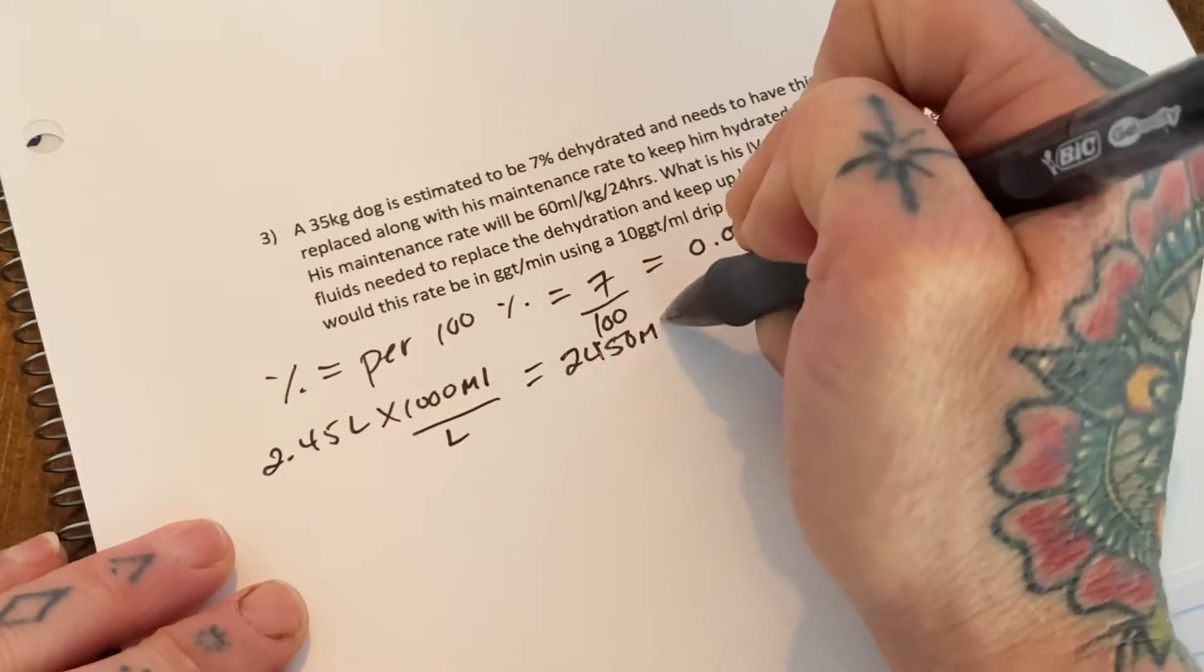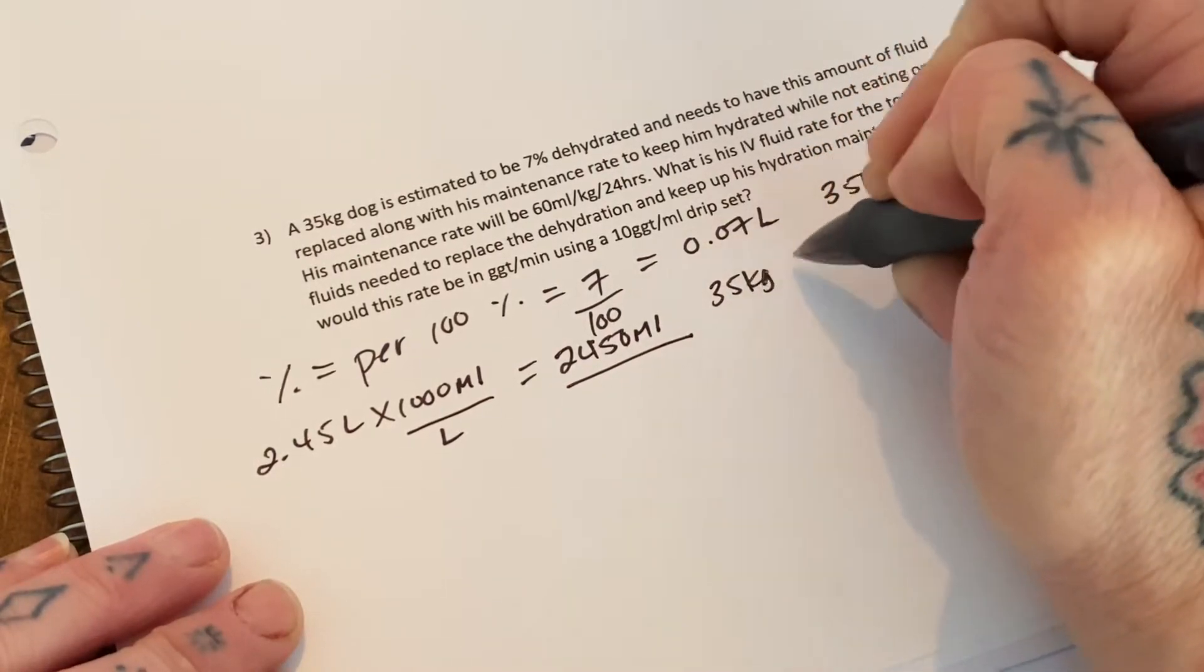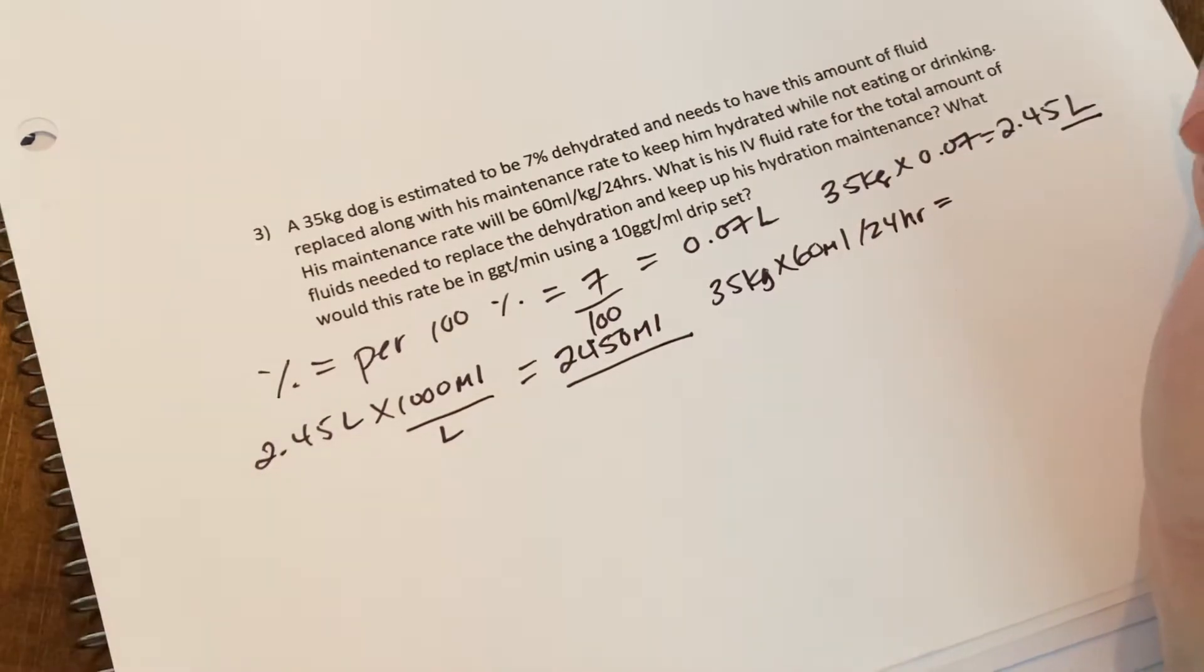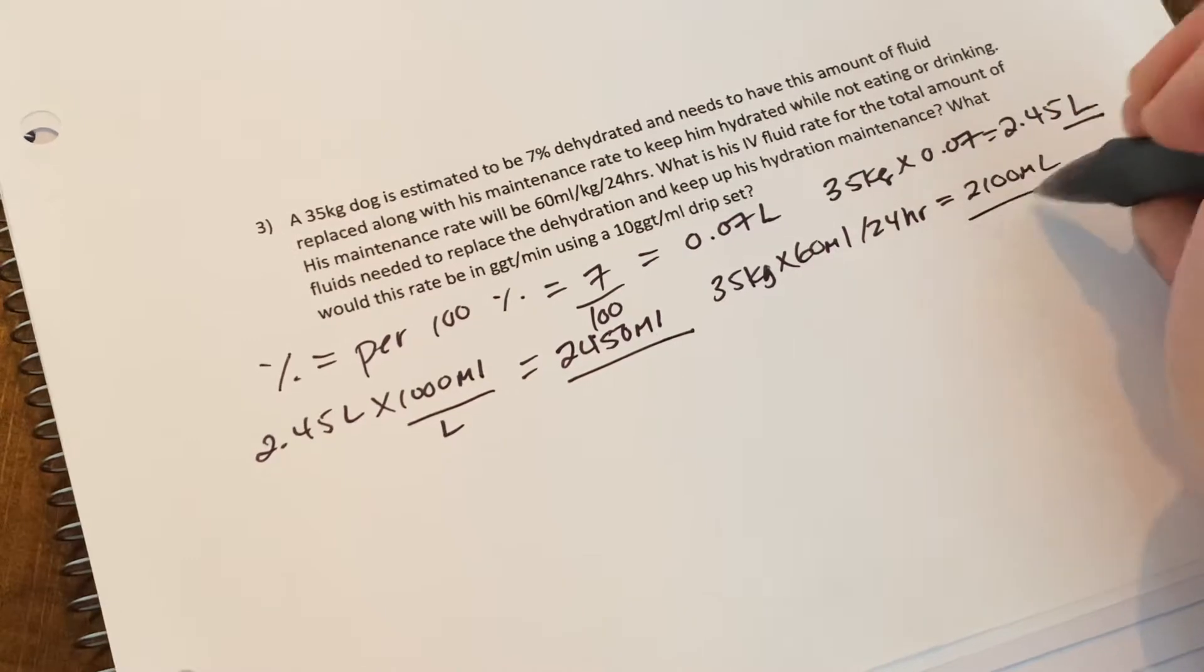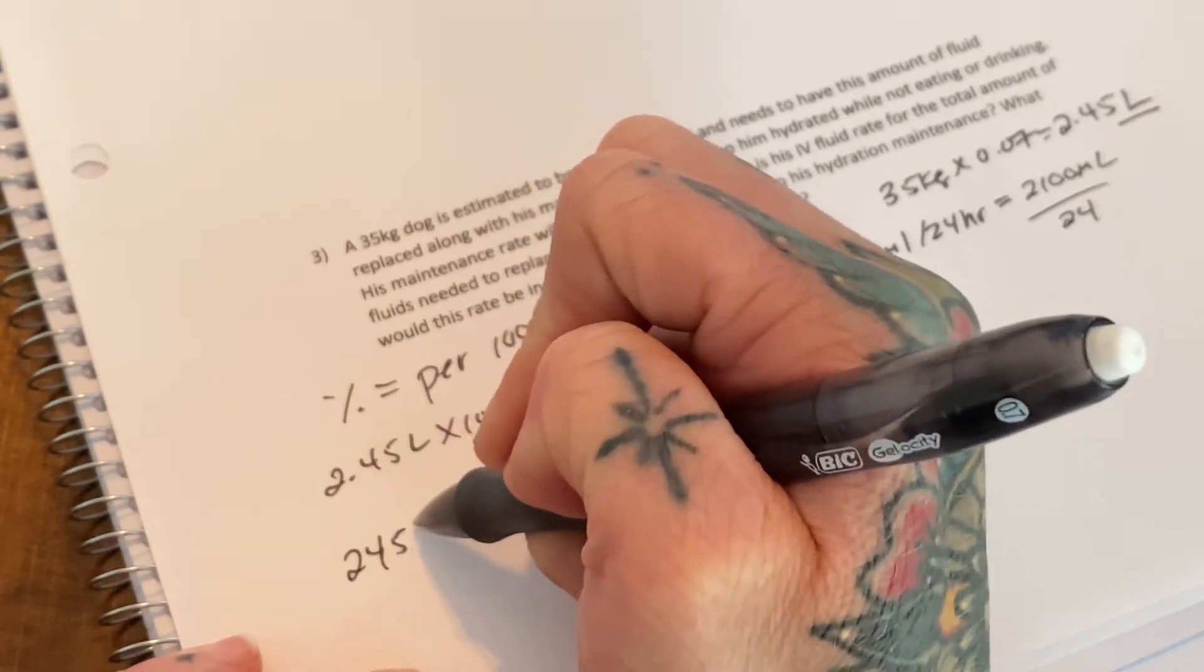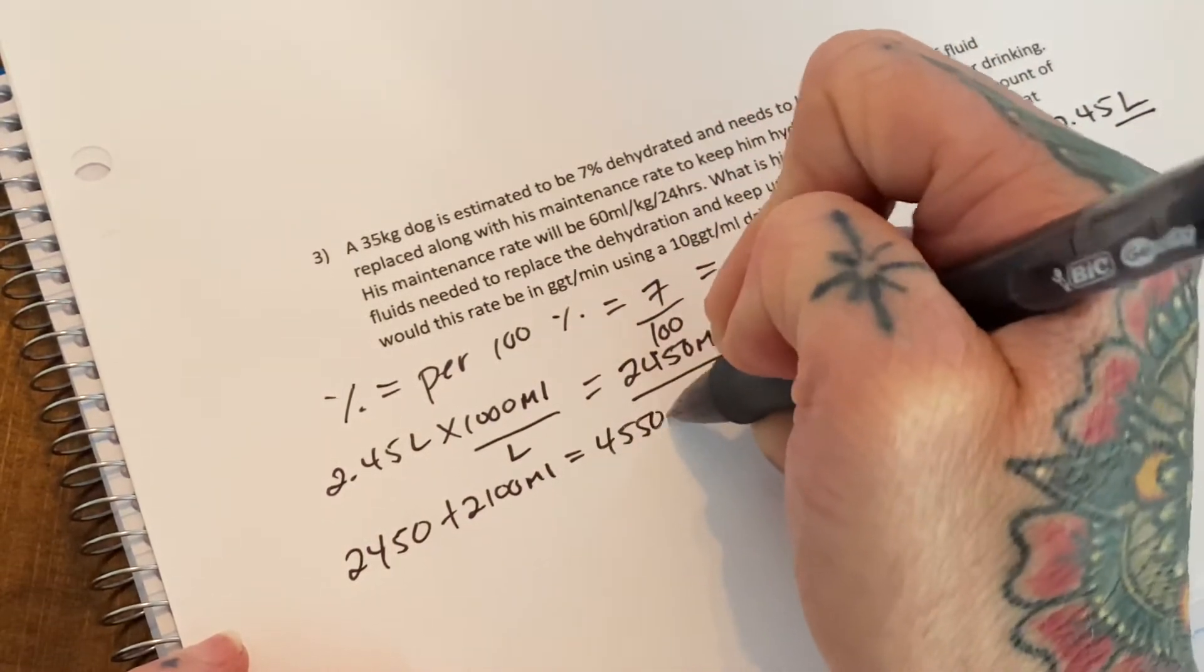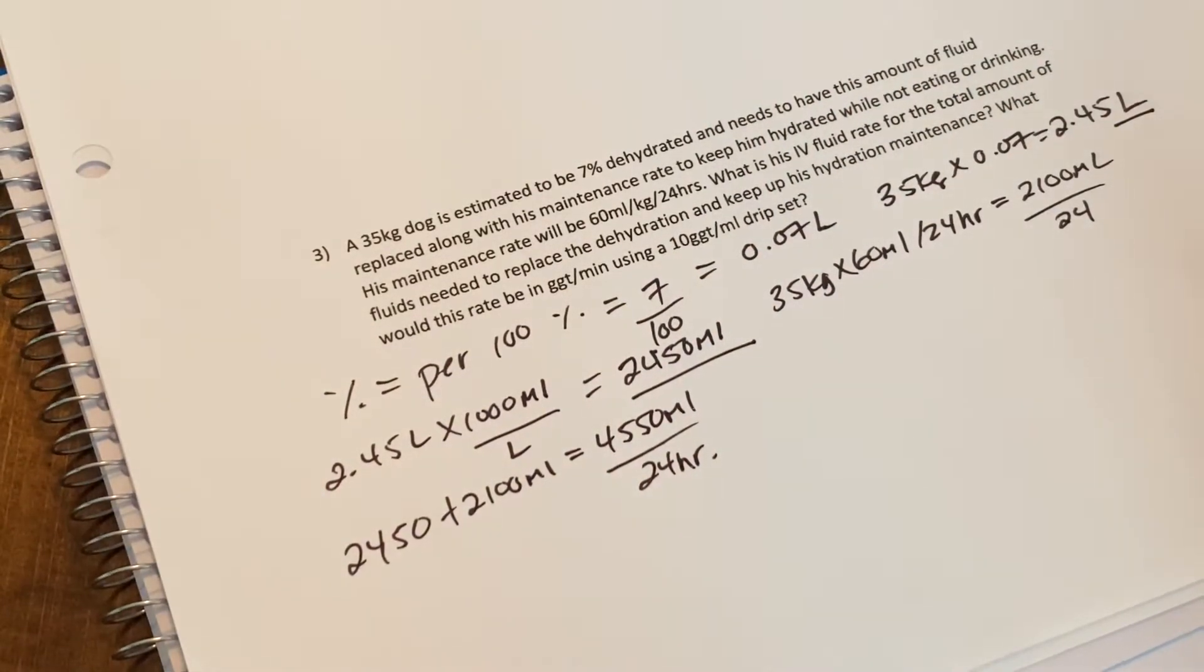So that's his deficit. His maintenance rate is 35 kilograms times 60 mils in 24 hours, so 35 times 60 equals 2,100 mils, so that's how many mils we need in 24 hours. And we want to replace the total fluid deficit over 24 hours, so we need to add those together: 2,450 plus 2,100 equals 4,550 mils over 24 hours.